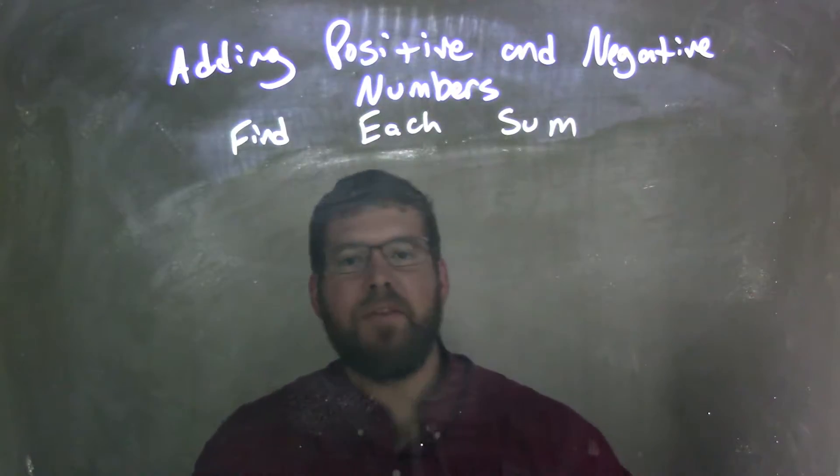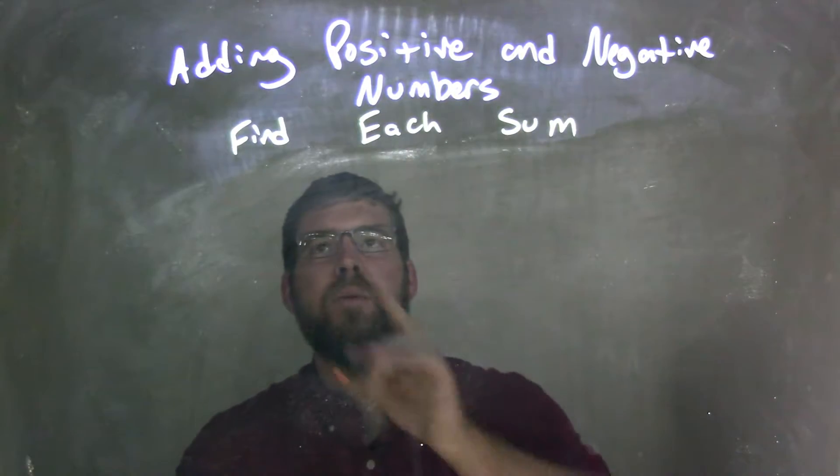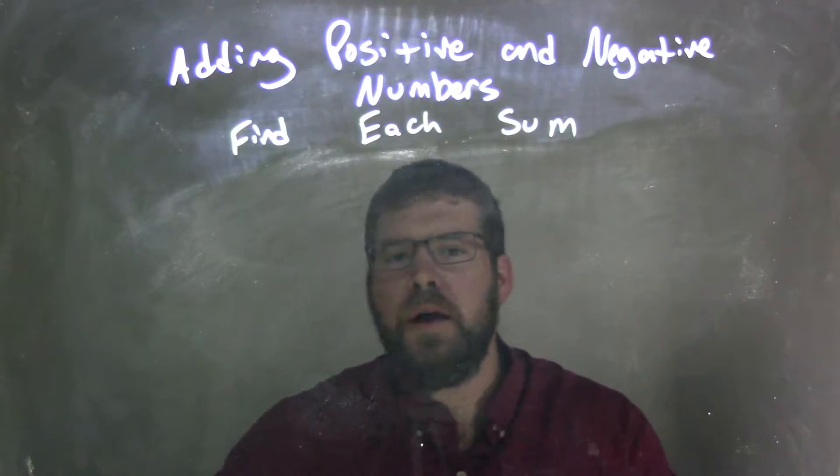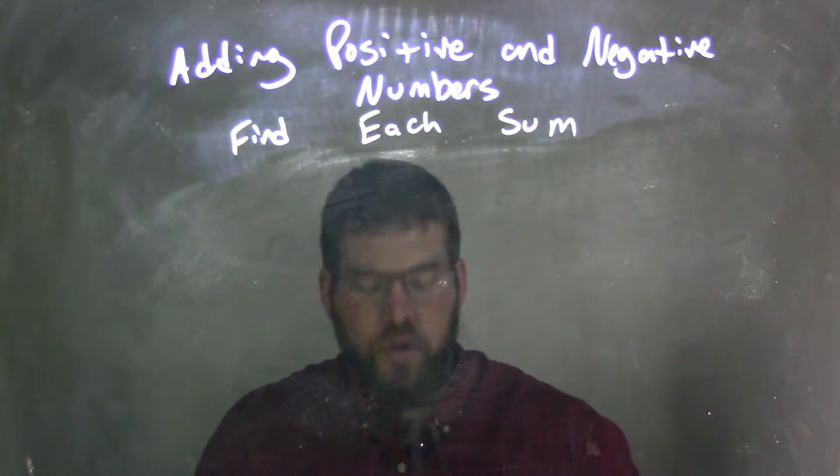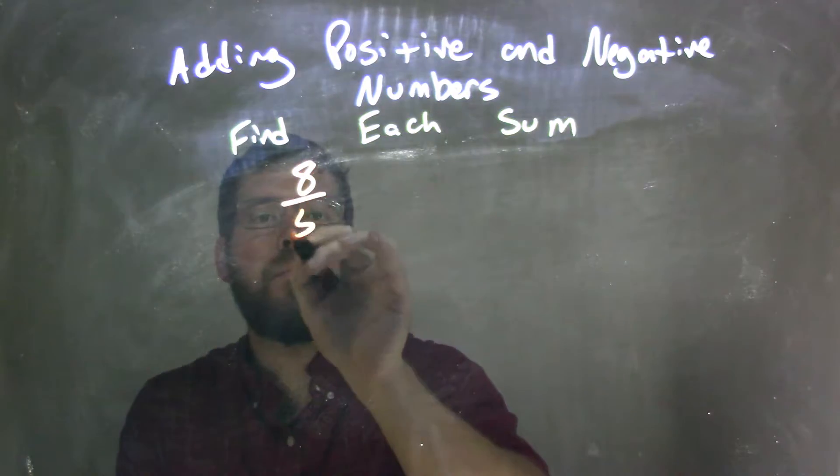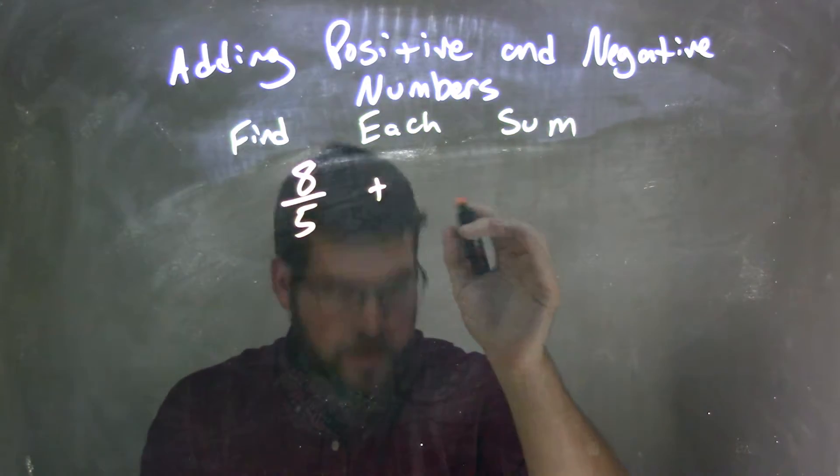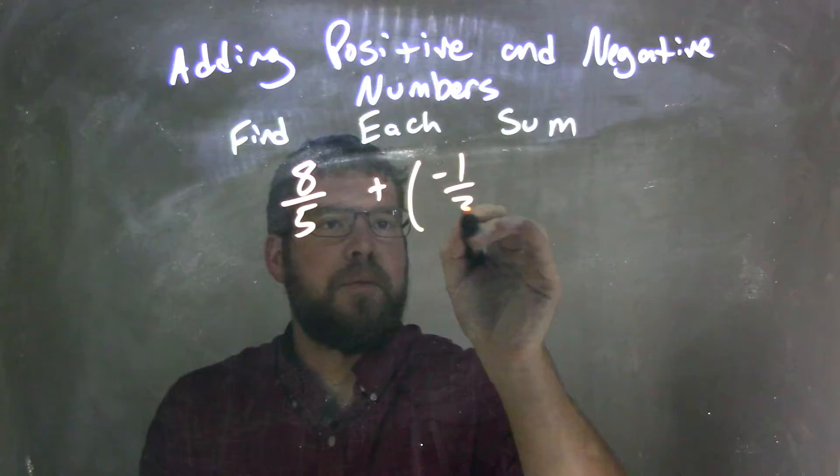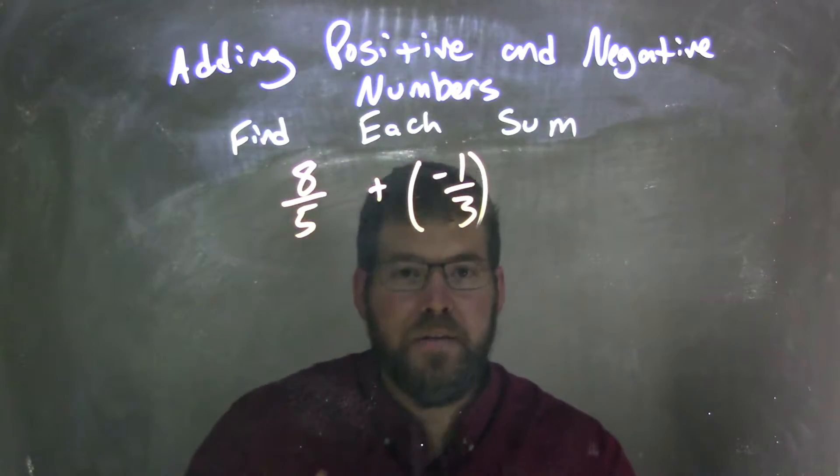Hi, I'm Sean Gannon, and this is Minute Math. Today we're going to learn about adding positive and negative numbers. We want to find each sum. So if I was given this expression, 8 fifths plus negative 1 third, and I wanted to add them together.